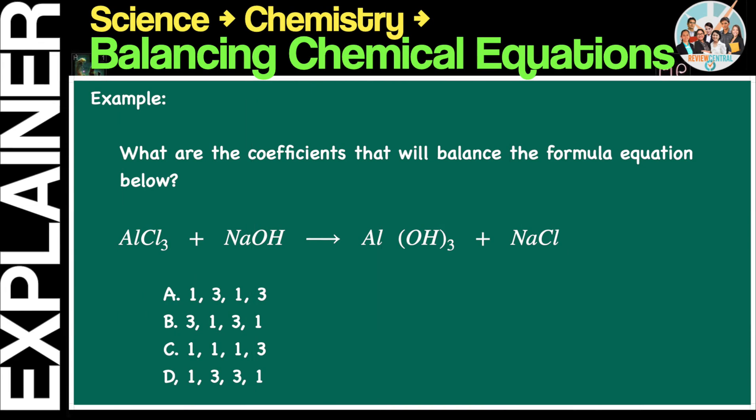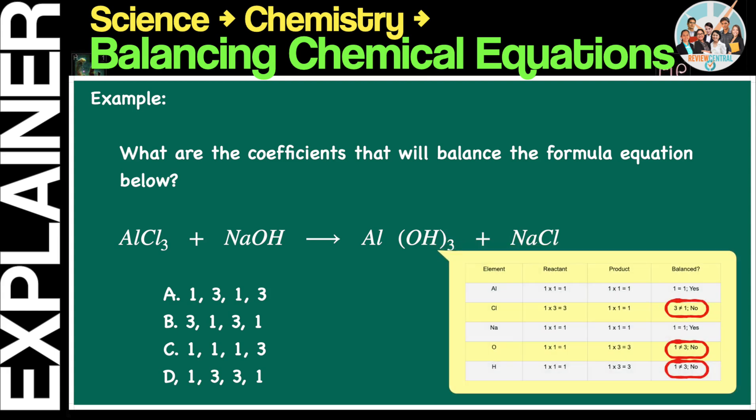Now let's apply what we just learned on a question modeled on an actual science proficiency exam. Note, this one is modeled on a UPCAT question. The question goes as follows. What are the coefficients that will balance the formula equation below? To balance the given chemical equation we need to count all of the atoms on each side of the chemical equation. Once we know how many of each type of atom there are, we can only change the coefficients or the numbers in front of atoms or compounds, to balance the equation. In the given formula, there are one atom of aluminum, three atoms of chlorine, one atom of sodium, one atom of oxygen, and one atom of hydrogen on the left side of the equation. On the other hand, there are one atom of aluminum, three atoms of oxygen, three atoms of hydrogen, one atom of sodium, and one atom of chlorine on the right side of the equation. Let's summarize these using a table, as shown. As you can see, the chemical equation is not balanced.